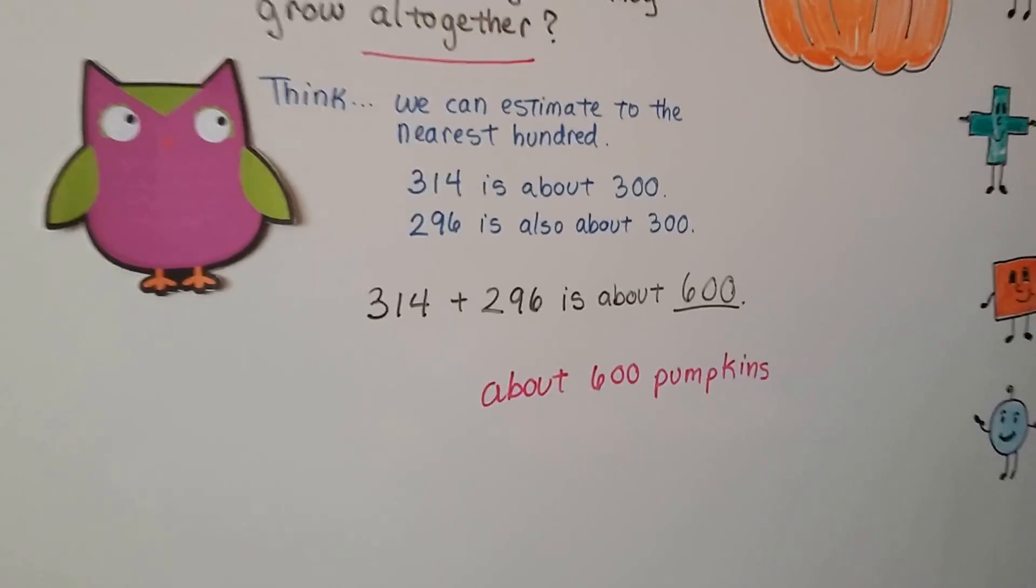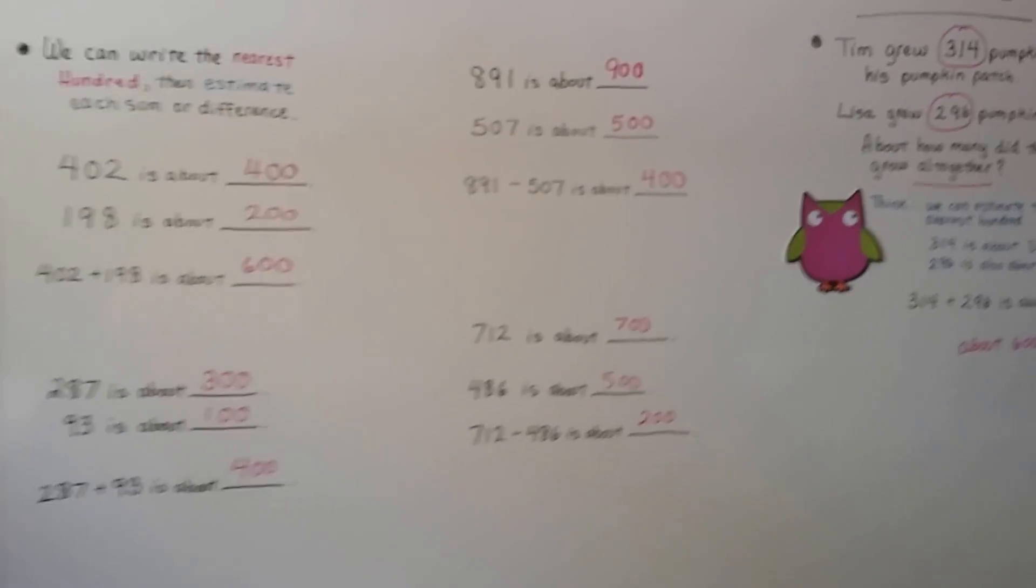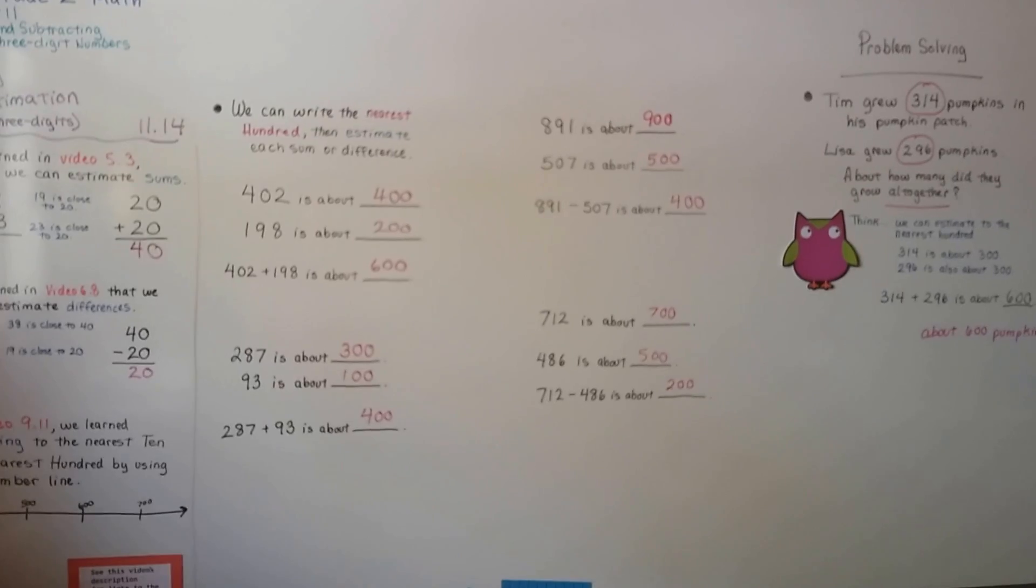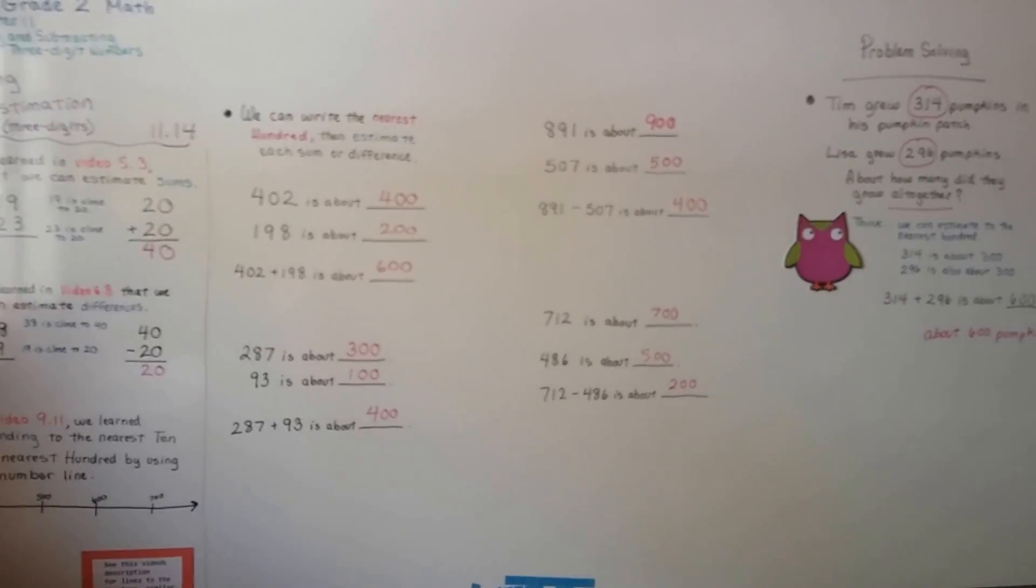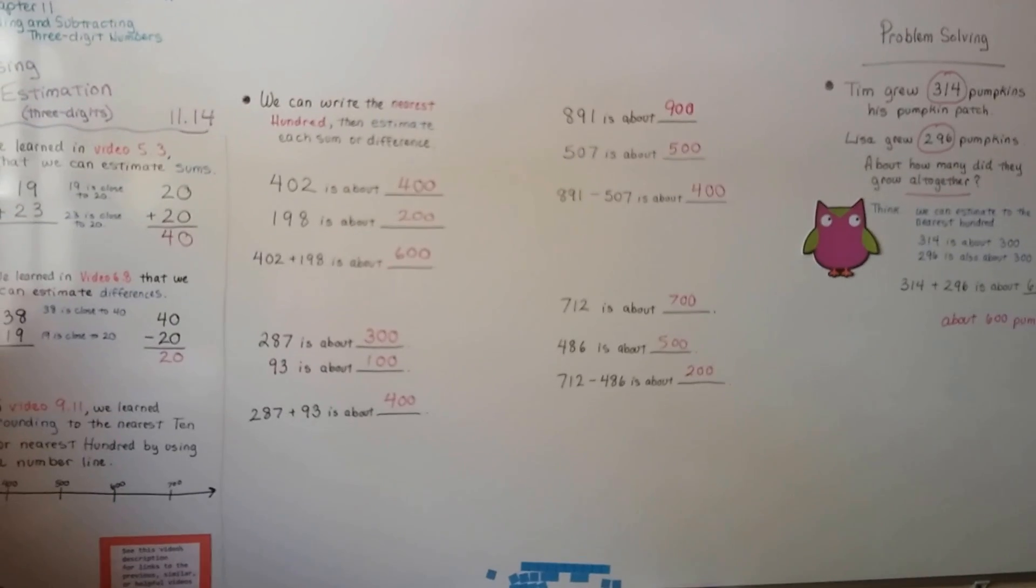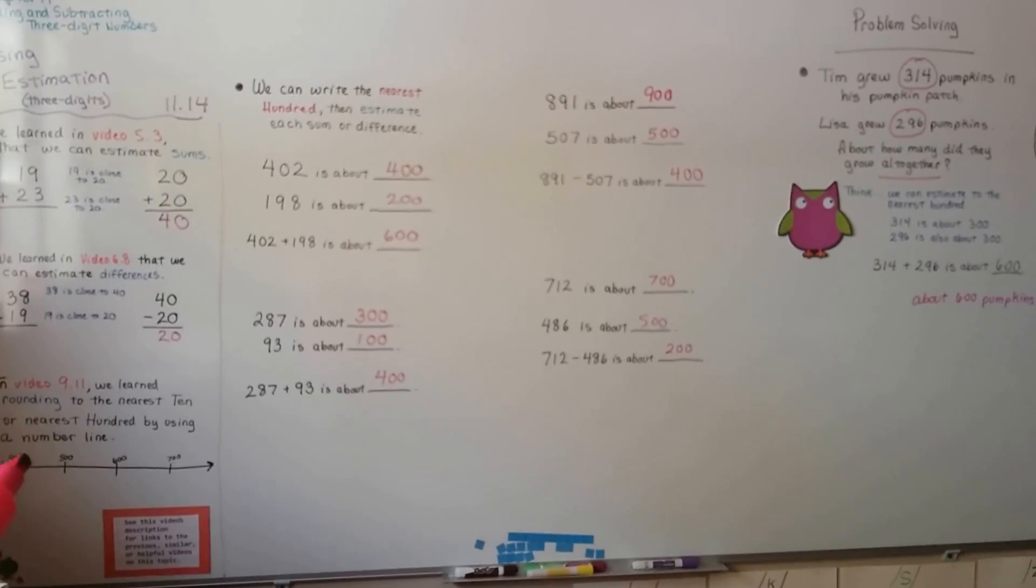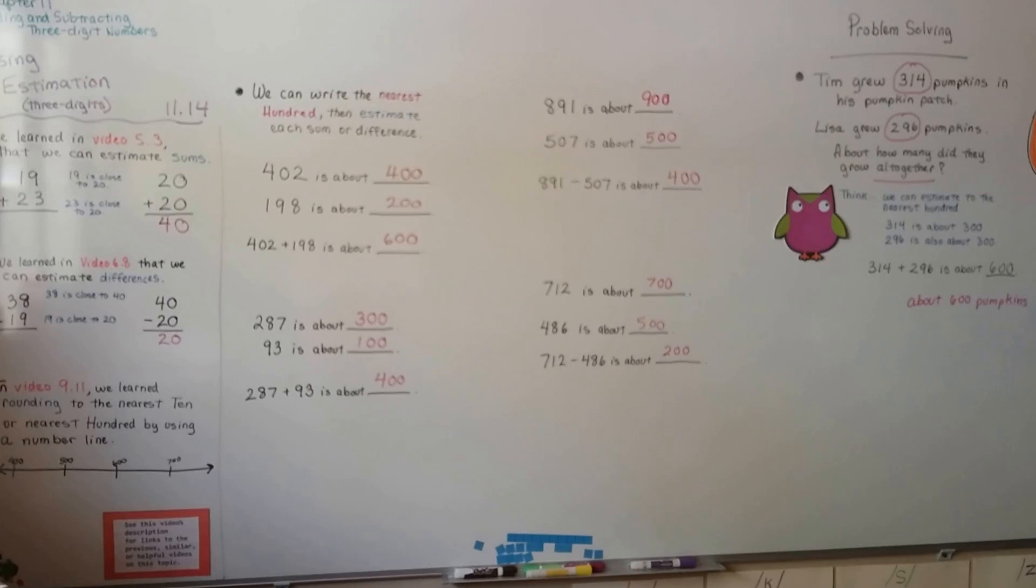If you need to use a number line, that's fine until you get really good at this. Just see which number in the hundreds, which hundreds is the number closest to. Make yourself a number line and maybe you can put the 10, 20, 30, 40, 50, 60, 70, 80, 90 in between each one.